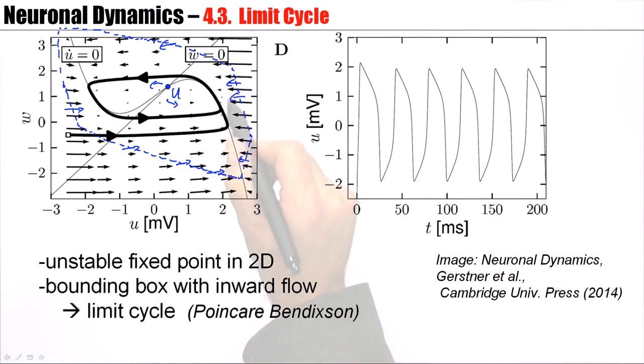A trajectory cannot leave. Rather, trajectories enter. Now, the only way that a trajectory could stop would be at a stable fixed point.